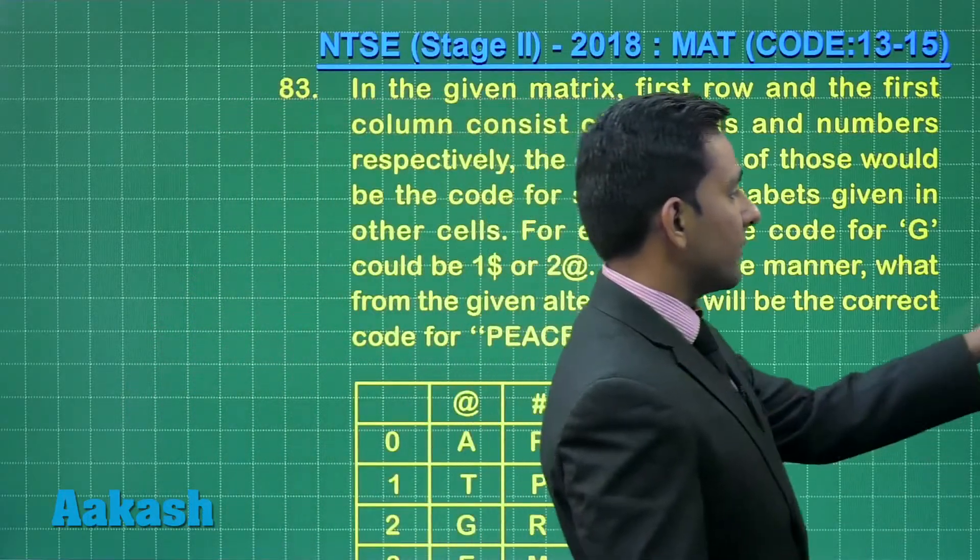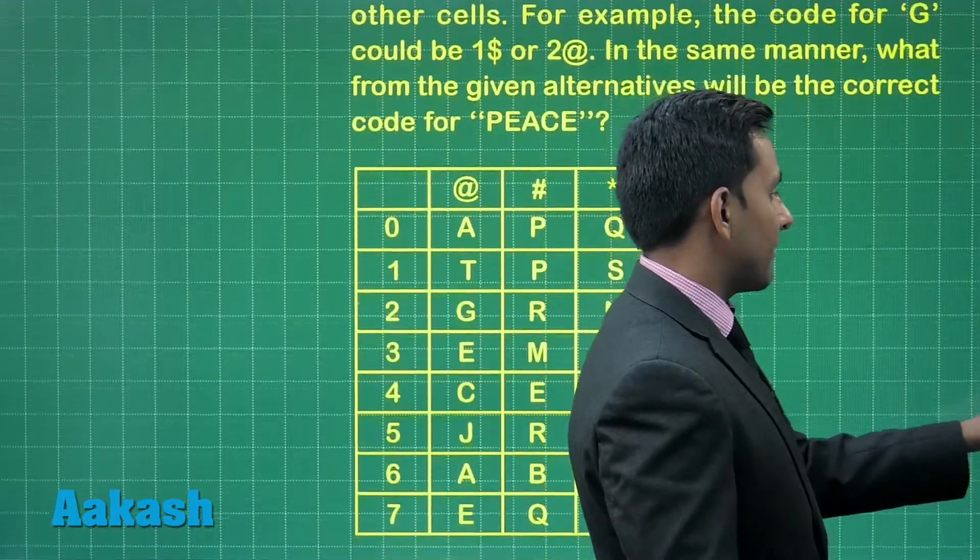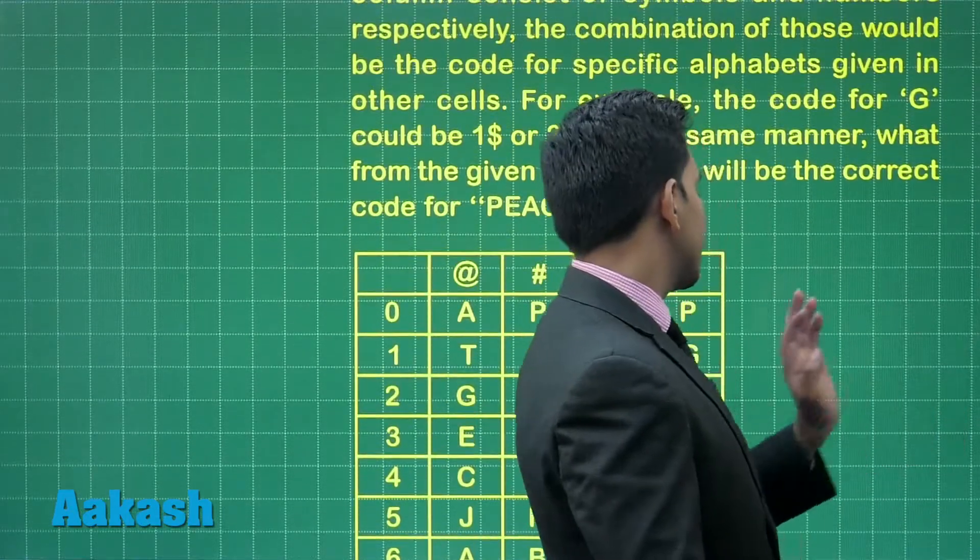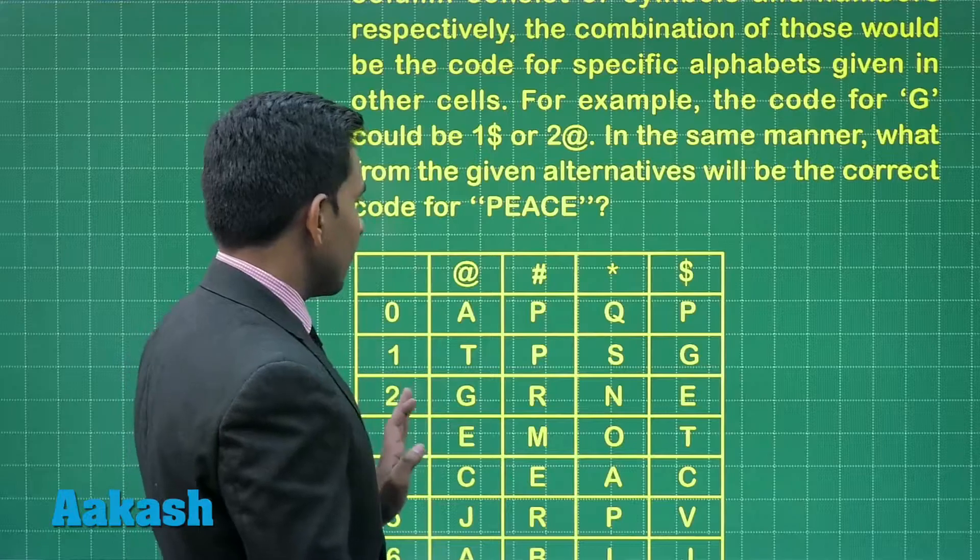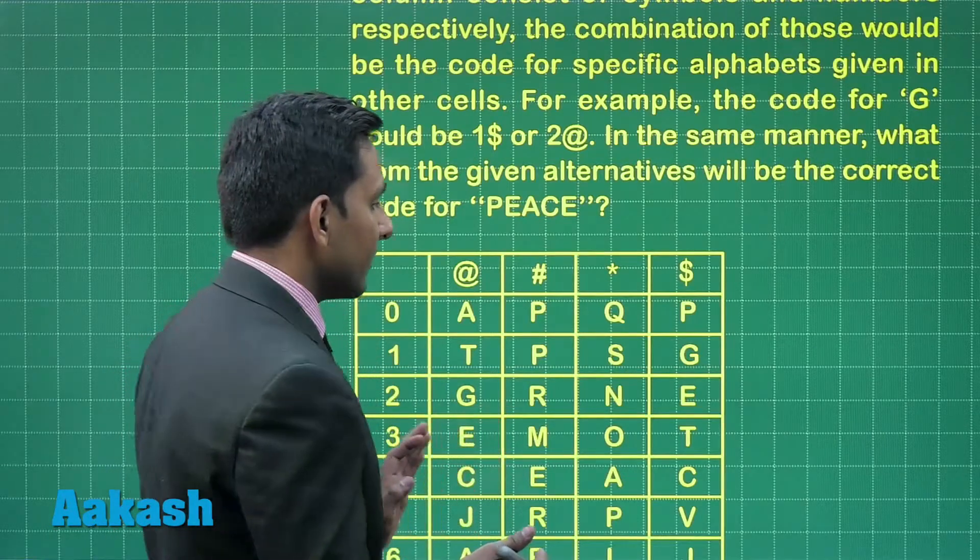So we have to find the code for word PIECE using the given pattern. Here we can see that G is coded as 1 dollar and 2 at the rate. So what is the coding pattern here.